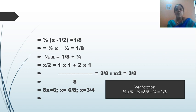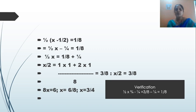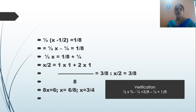Coming to the verification part: I consider the equation x/2 minus 1/4 equals 1/8. Wherever x appears, I substitute 3/4. So it is 1/2 into 3/4 minus 1/4, which gives me 3/8 minus 1/4. Taking the LCM and subtracting, I get 1/8, which is the required RHS. LHS equals RHS, so the result we obtained is correct.